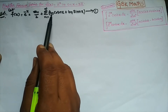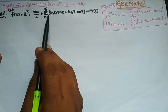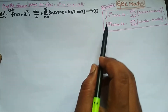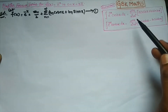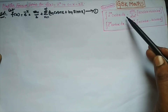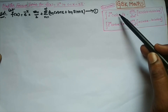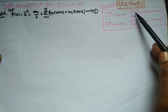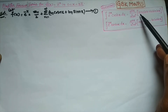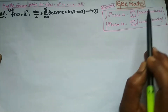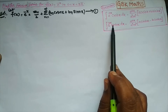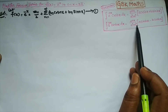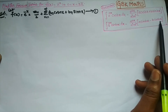Now we are going to find a₀, aₙ, and bₙ, then substitute in equation number 1 for the final solution. Before solving, we should recall two formulas: integral of e^(ax)cos(bx)dx = e^(ax)/(a²+b²) × (a·cos(bx) + b·sin(bx)), and integral of e^(ax)sin(bx)dx = e^(ax)/(a²+b²) × (a·sin(bx) − b·cos(bx)).